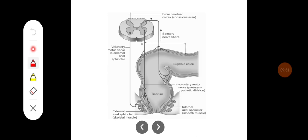This diagram shows the defecation reflex, illustrating the internal anal sphincter on the inside and the external anal sphincter on the outside. Food in the sigmoid colon or the rectum increases parasympathetic activity, which causes peristalsis of the sigmoid colon and reflex inhibition of both the internal and external anal sphincters, leading to the defecation reflex.